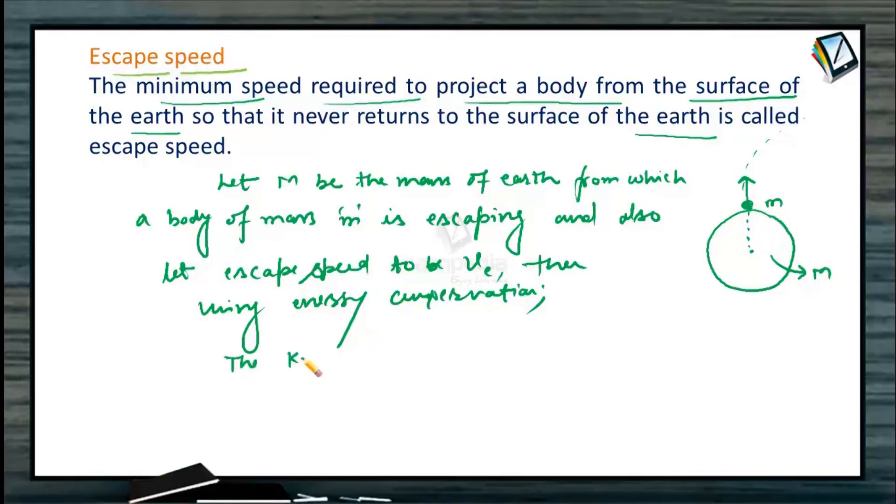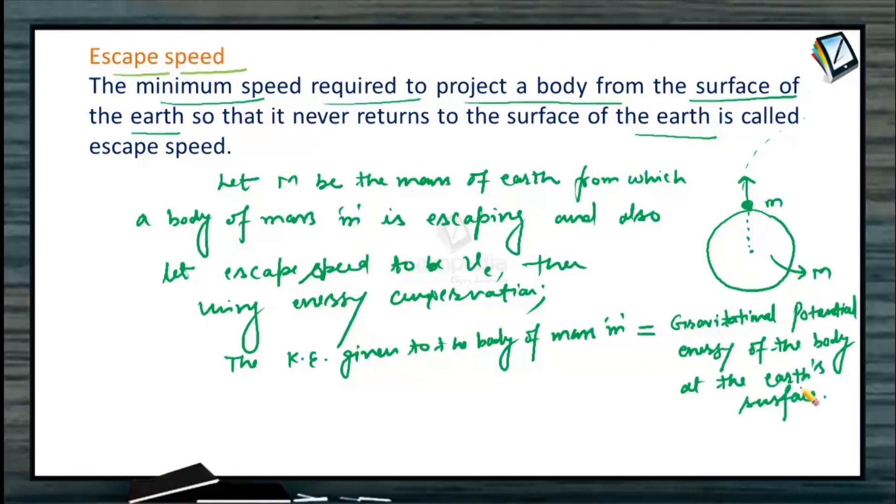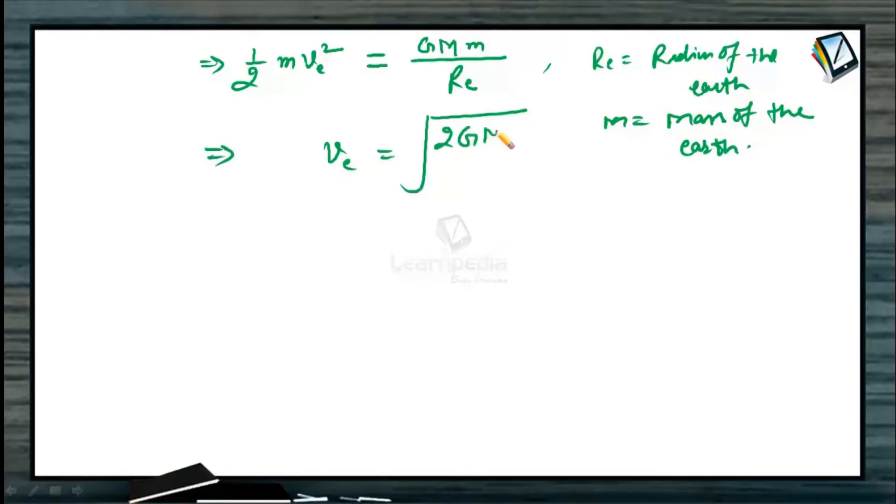The kinetic energy given to the body, half of m V subscript E squared, equals to the potential energy at earth surface which is G capital M small m by R subscript E, where R subscript E is the radius of the earth and M is mass of the earth. Solving this equation further, we will be getting the escape velocity or escape speed V_E to be root over 2GM by R_E.